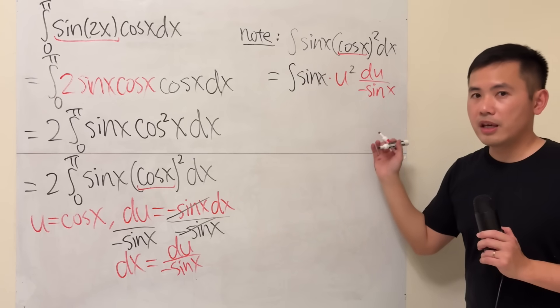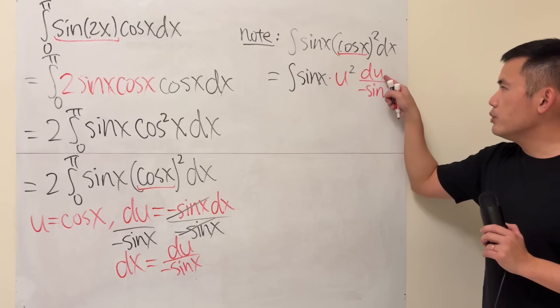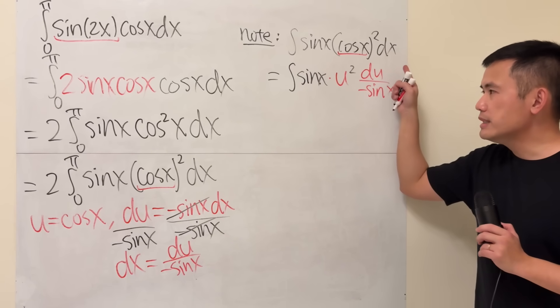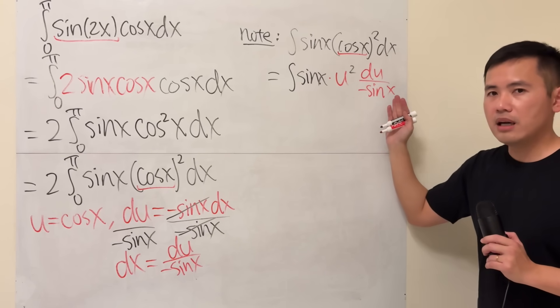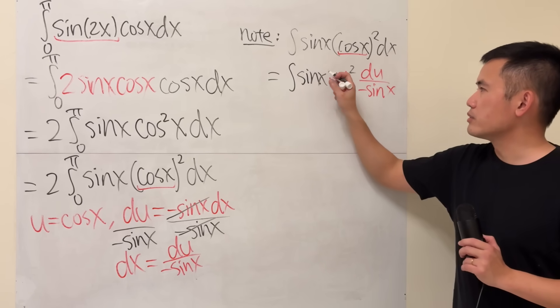dx we set as du over negative sine x. And this is our multiplication. One thing you have to remember is that, though, du, we are in the u world. Once we are in the u world, x is not allowed. But here we have sine x, and this is divided by negative sine x. They cancel out. Very nice.